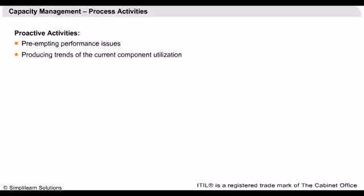The proactive activities of capacity management should include: preventing performance issues by taking necessary actions before they occur; producing trends of the current component utilization and estimating future requirements; and using trends and thresholds for planning upgrades and enhancements.